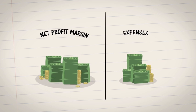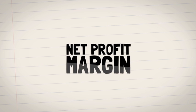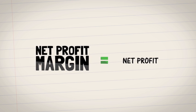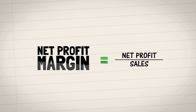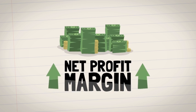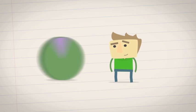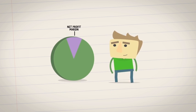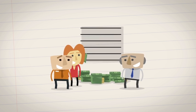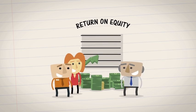The second ratio is net profit margin. This represents the portion of money left after subtracting all expenses. To calculate net profit margin, divide net profit by sales. The higher the margin, the more profitable the company is. In general, look for margins of 7% or more.